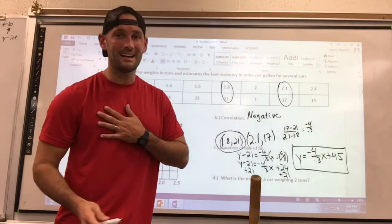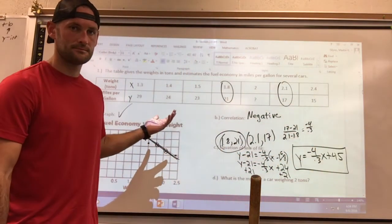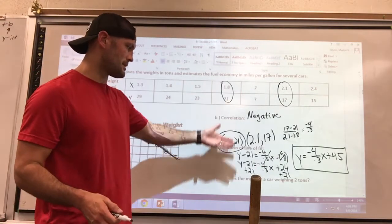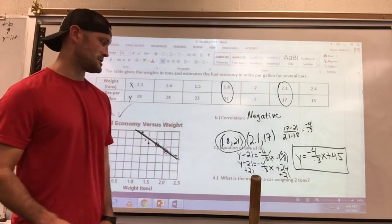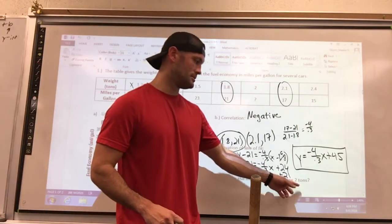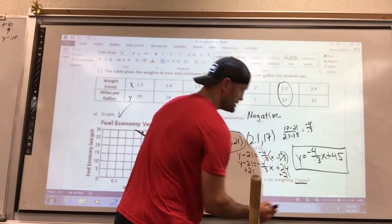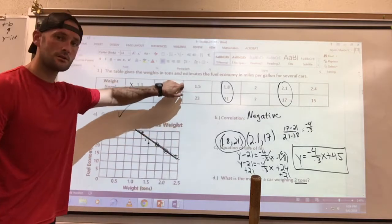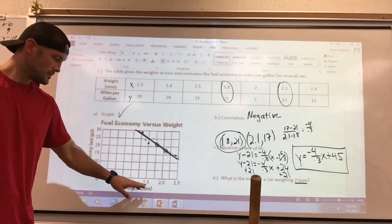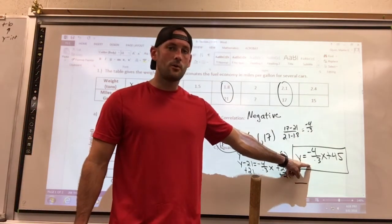Now that is my slope intercept equation for line of best fit for my data set. A lot of work, but it wasn't any skills we didn't know how to do. It was just understanding the process. Now our last question asks: what's the mile per gallon for a car weighing two tons? Now understand, there's two ways you can get this. First off, they just told you two tons - you look at your chart or at your graph, that's your x variable.